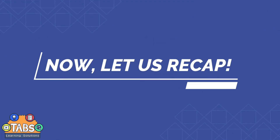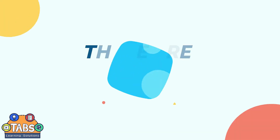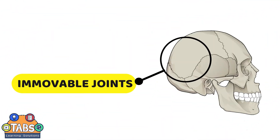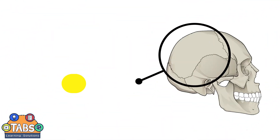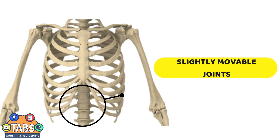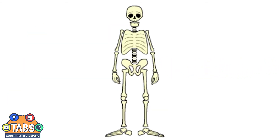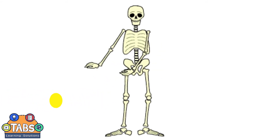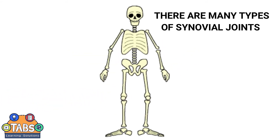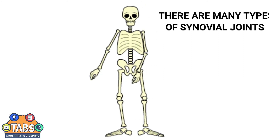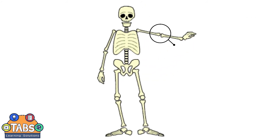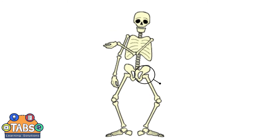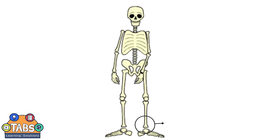Now let us recap. There are three classifications of joints: the immovable joints, the slightly movable joints, and the freely movable or synovial joints. There are many types of synovial joints: hinge joints, pivot joints, ball and socket joints, and gliding joints.